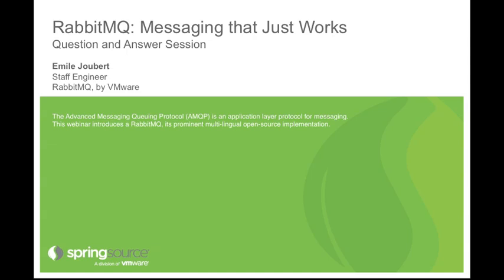In the case of RabbitMQ, because it's using AMQP, it's possible for different AMQP implementations to interoperate. So for example, if I had a client written for Qpid, it would be possible to use that to connect to a broker provided by RabbitMQ. I believe that level of interoperation is not possible in JMS.